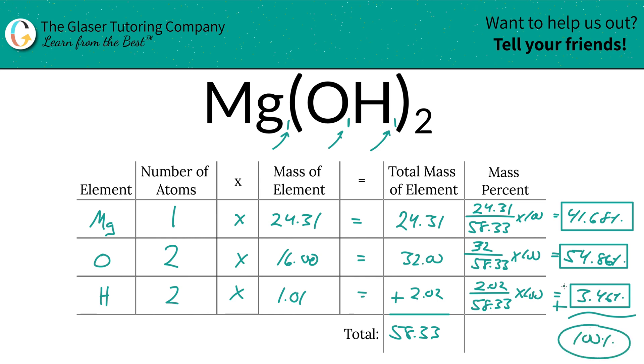You can also check yourself just by adding these percentages up, and it should be very close to 100. Sometimes when you round the numbers you might be off by a hundredth, but who cares?